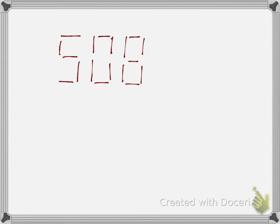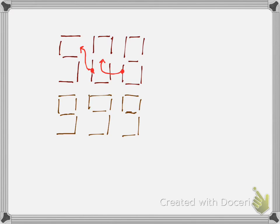Puzzle: move two matchsticks to get the largest number possible. The answer is 9.99 — the largest number you can make with three digits.